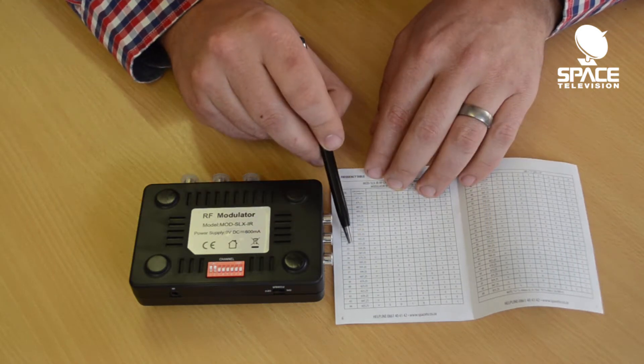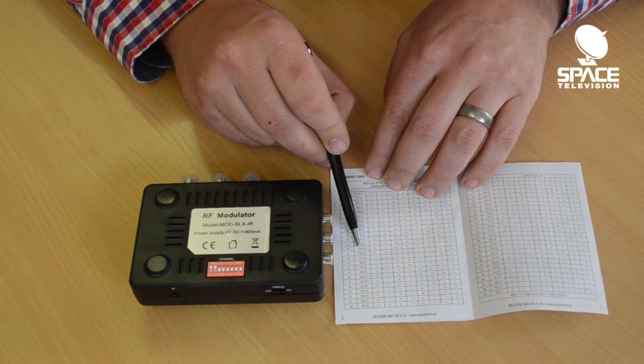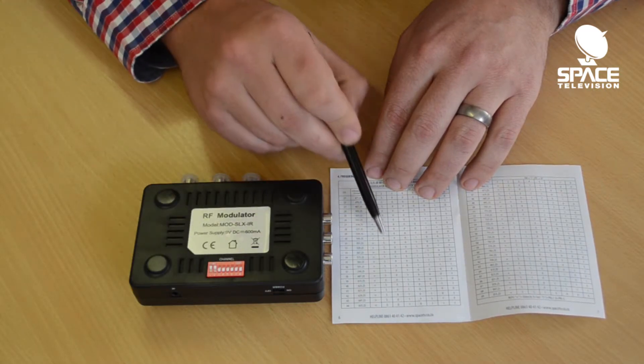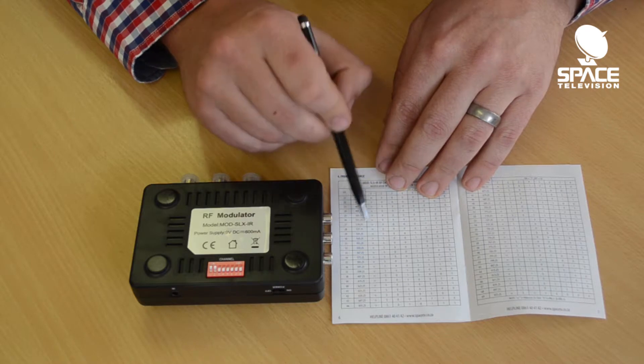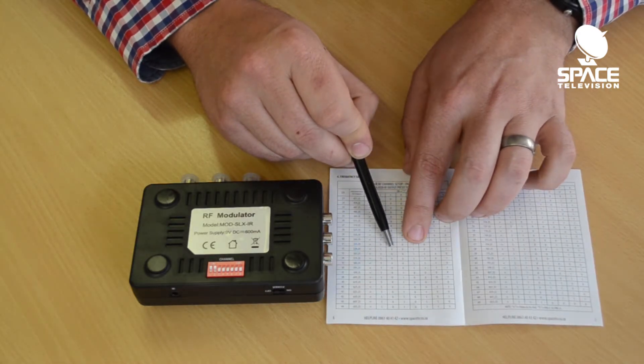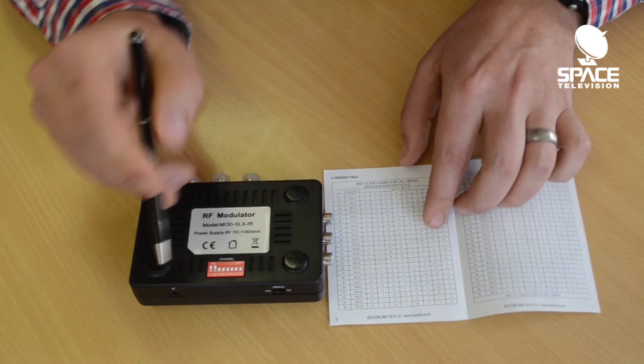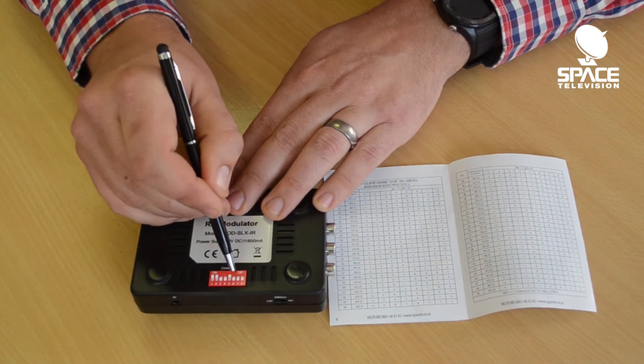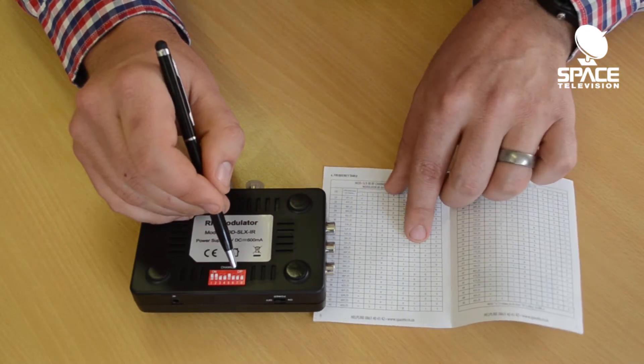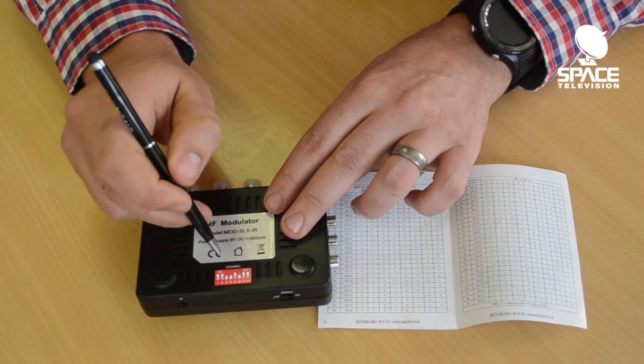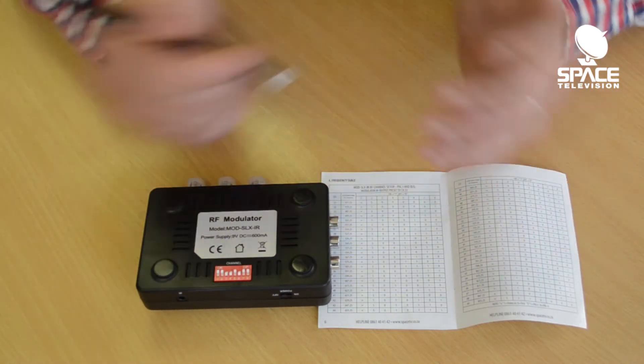Channel 32 is 559.25 megahertz. Ignore the first two dip switches, 1 and 2, and look at dip switch 3 through 8. For channel 32, it's 0 0 1 0 1 1. Let me go back and double check—so it's 0 0 1 0 1 1.